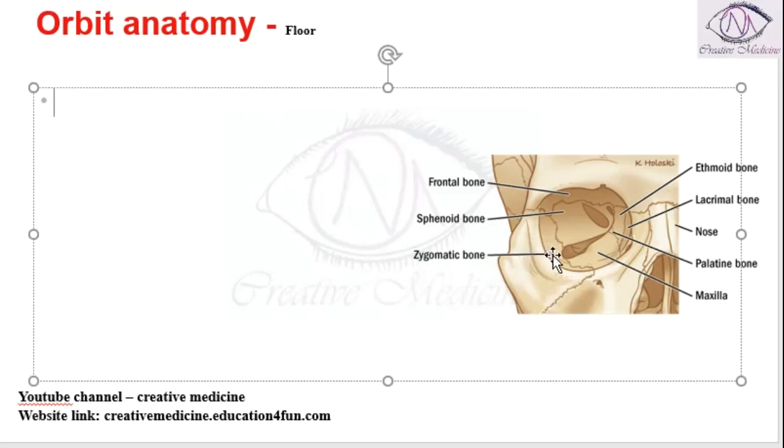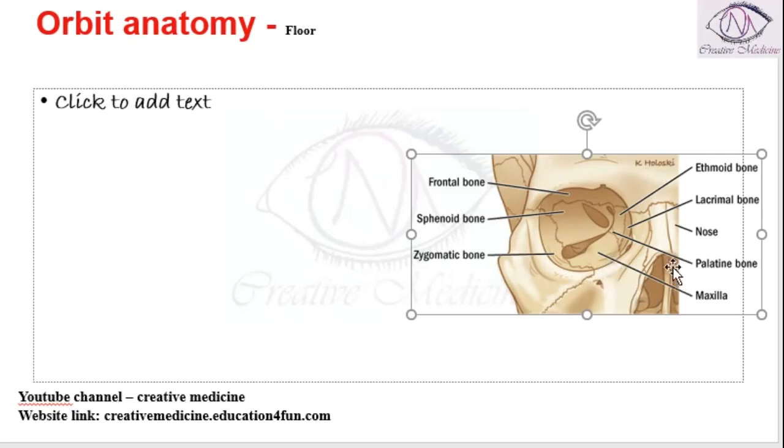In the floor of the orbit we have the orbital surface of the zygomatic bone, the orbital surface of the maxilla, and then we have the palatine bone. These are the three structures: the zygomatic bone, the maxilla, and this small bone which is the palatine bone.